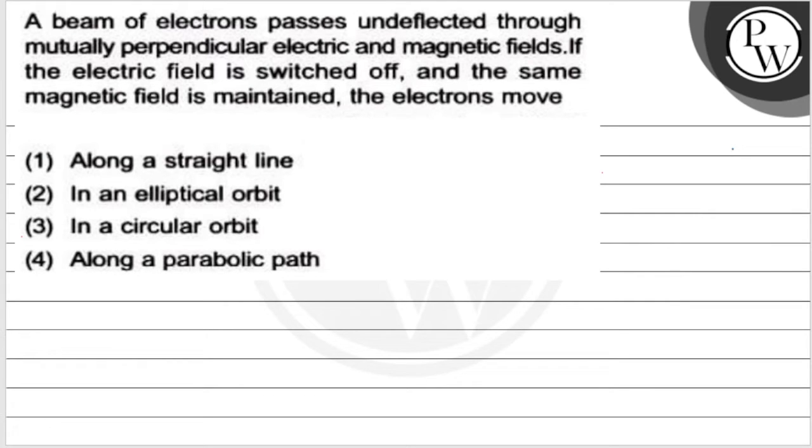Hello, let's see this question. The question says, if a beam of electrons passes undeflected through mutually perpendicular electric and magnetic fields, if the electric field is switched off and the same magnetic field is maintained, the electrons move. These are four options. So let's define in which way the electron will move.